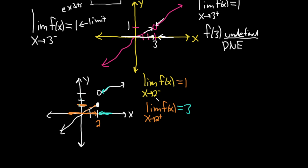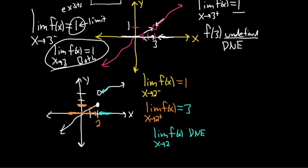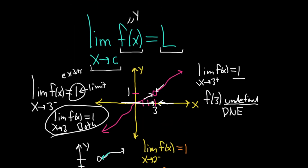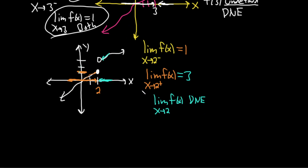Notice something different happens in this example. When we approach 2 from the left we get 1, and from the right we get 3. These are different, which means the regular two-sided limit of f of x does not exist. In the first example it does exist because you got 1 in both cases, so the limit as x approaches 3 is equal to 1. Whenever you see a limit with no plus or minus, you need to approach from both directions. This mainly comes up in problems where the limit does not exist, where it's infinity, or in piecewise functions. It mainly comes up in graphing problems and piecewise functions.